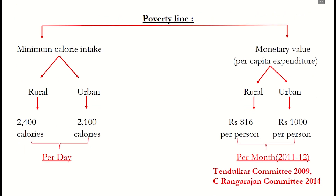Now let's understand how to determine the poverty line. Till 2009, the poverty line was determined on the basis of minimum calorie intake. For rural areas, 2400 calories per day was decided, and for urban areas, 2100 calories per day. Since people in rural areas engage in more physical work, calorie requirements are considered higher there. However, this calorie-based poverty line had its demerits — it did not specify calorie intake based on age or sex, and did not consider basic requirements like housing, clothing, education, health, and sanitation.